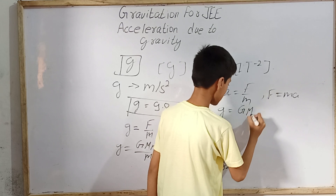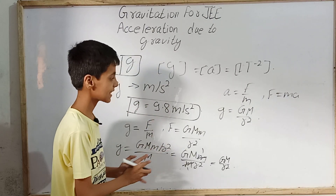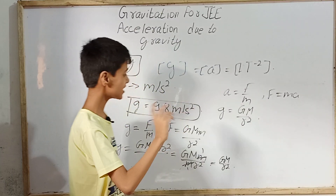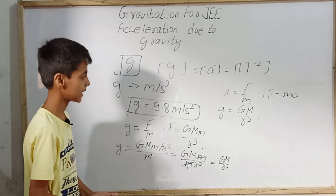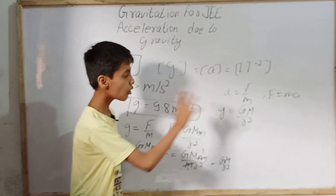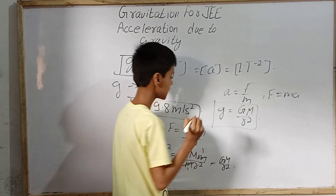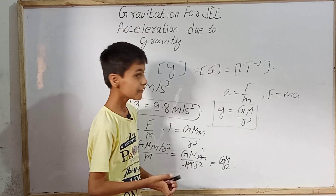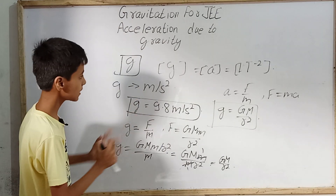So the formula for acceleration due to gravity is g = GM/r². This is why acceleration due to gravity is the same for all objects — whether heavy or light — because the mass of the object does not appear in the formula. Capital M is the mass of Earth, so for all objects on Earth g = GM/r². However, the value of g may vary when we go very deep into the Earth or at a much higher altitude.